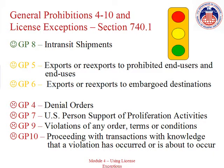You must consider the applicability of General Prohibitions 4 through 10 before using a license exception, because license exceptions cannot be used in all circumstances. General Prohibitions are described in Section 736 Part 2 of the EAR and were covered in Module 3 of this series. The limits on the use of license exceptions based on General Prohibitions 4 through 10 are described in Section 740 Part 1. General Prohibition 8 imposes no limitations on license exception eligibility. However, if your transaction is subject to General Prohibitions 5 or 6, your ability to use a license exception will likely be limited. If subject to General Prohibition 5, there are very limited circumstances in Part 744 that may allow for the use of a license exception. If subject to General Prohibition 6, consult Part 746 of the EAR to see if you are eligible. You may not use a license exception if your transaction is subject to General Prohibitions 4, 7, 9, or 10.